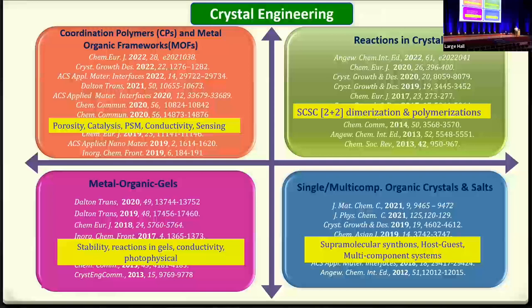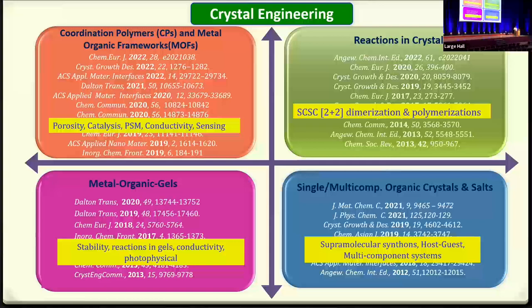In reactions in crystals, we generally focus upon solid-state 2+2 reactions and 2+2 polymerizations. For metal-organic gels, we look into the stability of these gels, whether we can connect covalent reactions in them, how to establish their structures, and whether we can use these soft gelating materials for connectivity or photophysical properties. In organic crystal engineering, we study hydrogen-bonded solids, multi-component systems, supramolecular synthons, and host-guest interactions.